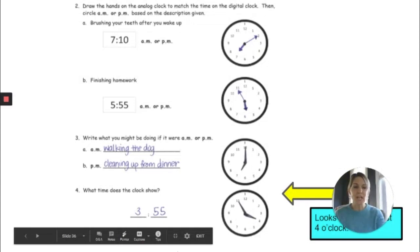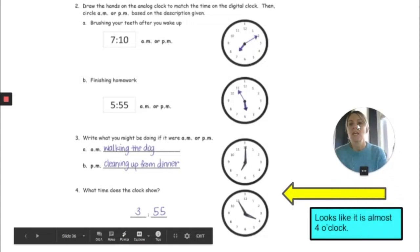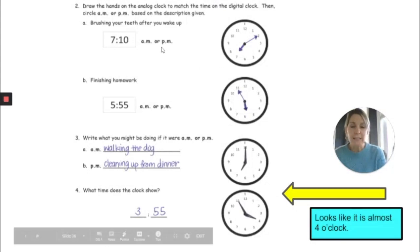Okay, let's check our answers. So for drawing the hands on the clock, I forgot to circle if this was AM or PM. That's okay because I can do it now. Let's see. Brushing our teeth after you wake up. That sounds like the morning. So I would say that that is 7:10 AM. Would you agree? And as you can see, my short hand is a teensy, weensy bit after the seven. And the long hand is on the two because I count by fives. O'clock, 05, 10 for 7:10.